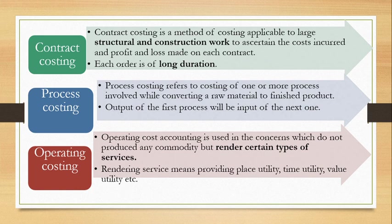The last method is operating costing. All the costing methods we have seen so far apply to products, but operating costing is for services — where you are not manufacturing a product. It applies to service-providing facilities. It gives place utility, time utility, and value utility. Wherever service-providing facilities exist, we apply the operating costing method.